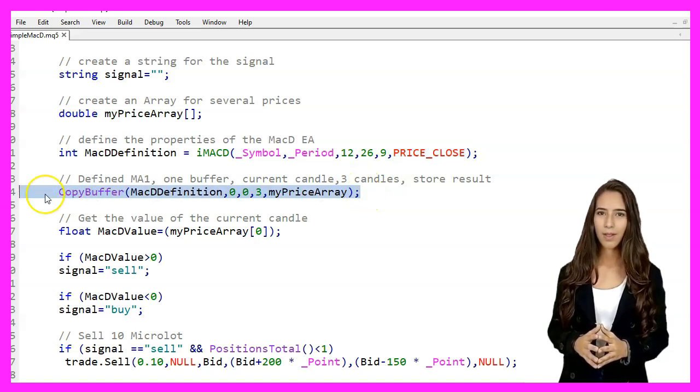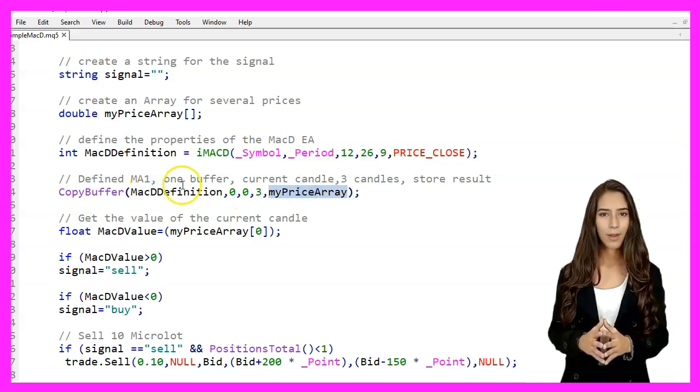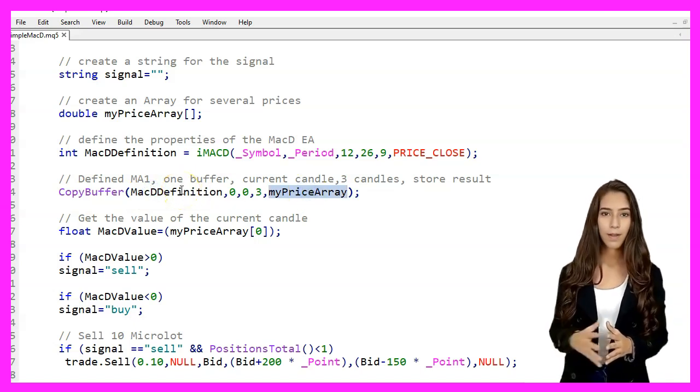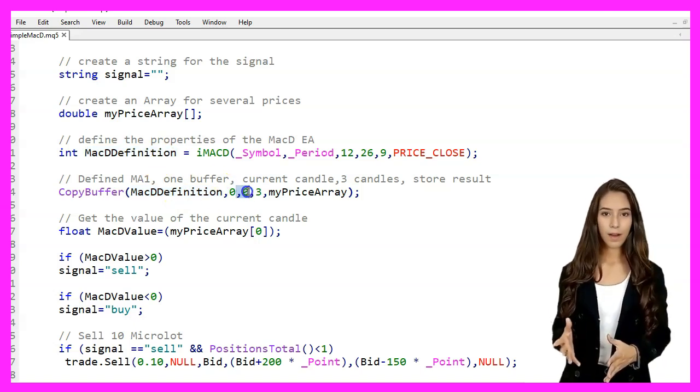We use the CopyBuffer function to fill our MyPriceArray with the IMACD values. We specify the MACD definition, buffer index 0, starting position 0, and the number of values to copy 3.